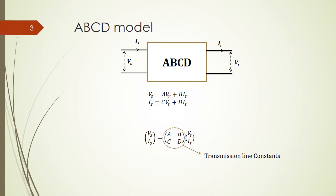In order to develop that kind of model, we summarize the transmission line into a box of four parameters A, B, C, D, which are called transmission line constants.